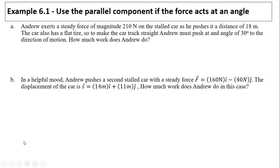Let's take a look at our first example. Andrew exerts a steady force of magnitude 210 newtons on a stowed car as he pushes it a distance of 80 meters. The car also has a flat tire, so to make the car track straight, Andrew must push it at an angle of 30 degrees to the direction of motion. How much work does Andrew do? Straightforward: W equals F s cosine phi. Since we know everything in this equation, F, s, and phi, we get 3,300 joules.